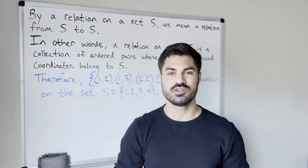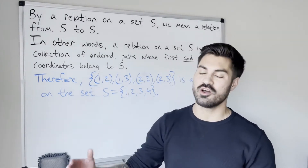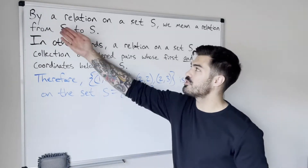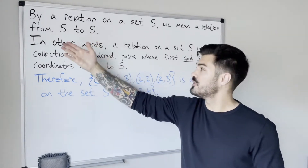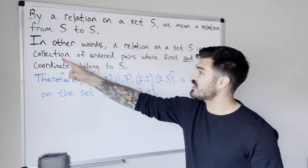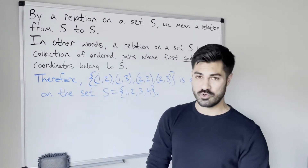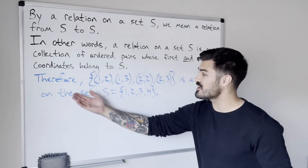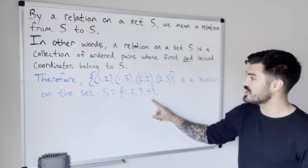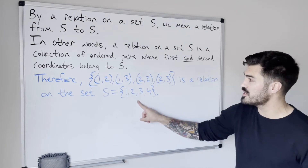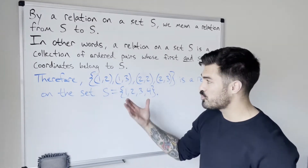Before we get to defining an equivalence relation, there's an important piece of terminology to unpack. We often say 'define a relation on some set' — so what exactly does that mean? By a relation on a set S, we mean a relation from S to S, from that set to itself. In other words, a relation on a set S is a collection of ordered pairs whose first and second coordinates both belong to S — it's a subset of the Cartesian product of S with itself. This is common terminology you're going to hear, and it's important to know what this means.